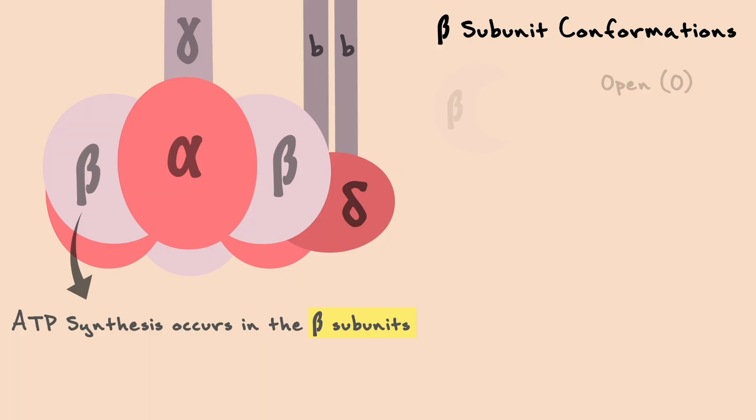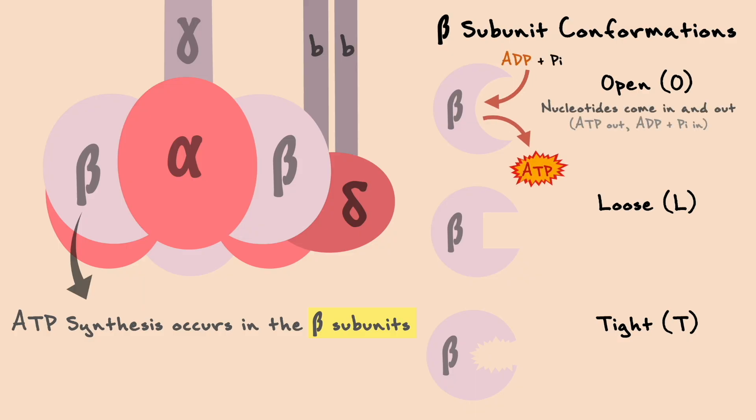The three conformations are open, loose, and tight. When a beta subunit is in an open conformation, nucleotides can come in and out because this conformation has a small affinity for ADP and Pi and basically no affinity for ATP. As such, ATP comes out and ADP plus Pi comes in.